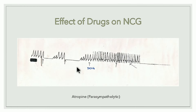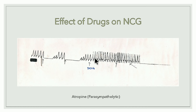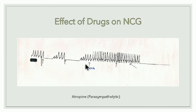Atropine is parasympatholytic — it blocks (lysis) the parasympathetic effect, making it stimulatory. When atropine is applied to the frog's heart, height of contraction increases and width decreases — force of contraction and heart rate both increase. Importantly, when vagus stimulation is given, the heart does not stop — because atropine blocks the parasympathetic effect. Crescent stimulation is also not effective, as post-ganglionic parasympathetic fibers are blocked. So with atropine: heart is stimulated, no vagal effect, no crescent effect.